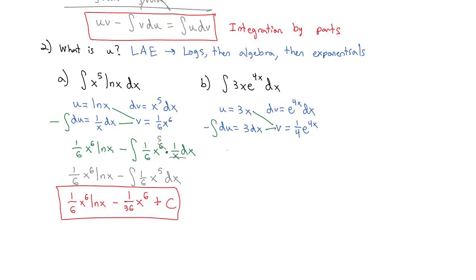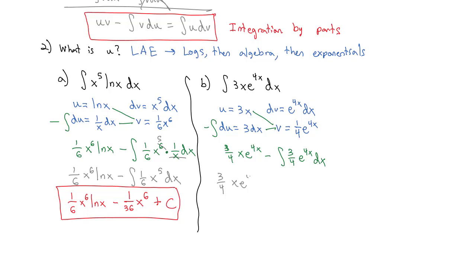Applying u times v minus the integral of v du: u times v is three x times one-fourth e to the four x, which is three-fourths x e to the four x. The integral of v du is three-fourths e to the four x dx, and its antiderivative is e to the four x divided by four again — so four times four is sixteen — giving three-fourths x e to the four x minus three-sixteenths e to the four x plus a constant.